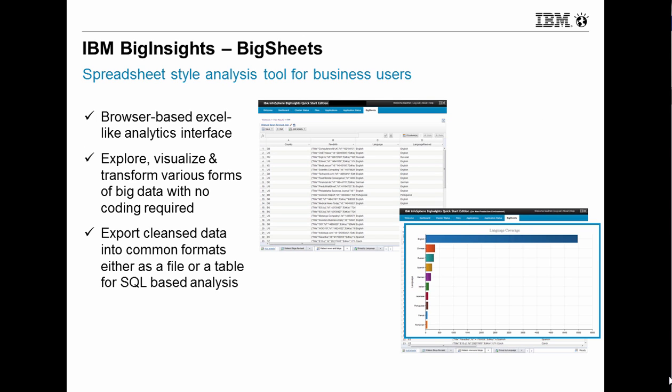Think of it as Excel on Hadoop, with the ability to provide on-the-fly structure to semi-structured and unstructured data that you typically encounter in Hadoop. In addition, Big Sheets includes the ability to do light transformations, filtering, and cleansing of data, and also visually analyze the data, so business users can start to derive insights with no coding required. Big Sheets also allows you to export the structured dataset into common formats like CSV, or turn it into a SQL table for further downstream SQL-based analysis.